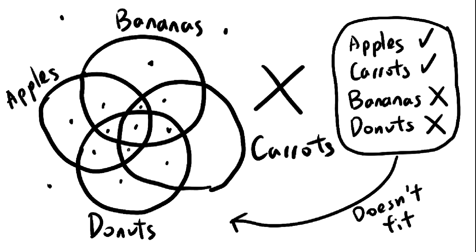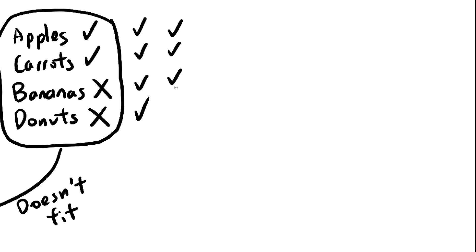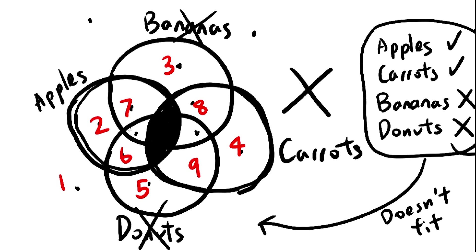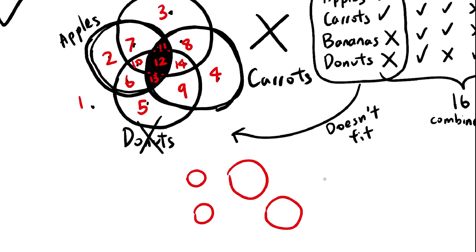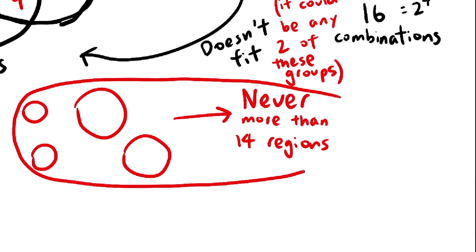There is no point anywhere on this diagram that is inside the apple circle, inside the carrot circle, but not inside the banana or donut circles. Venn diagrams must include a region for every possible combination of food preferences, all 16 of them, but this diagram only has 14 regions. In fact, the maximum number of regions you can get with 4 circles is 14, so 2 groups of people will always be left out. I'll provide a proof of this later, but first let me show you a valid 4-way Venn diagram.